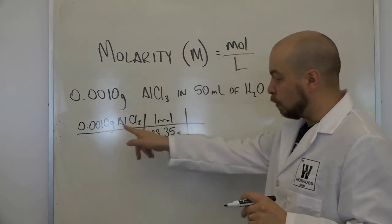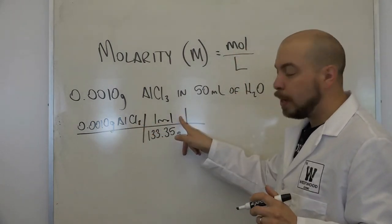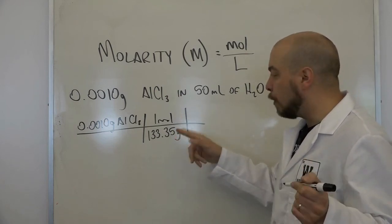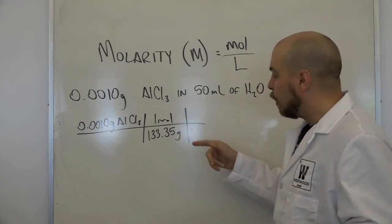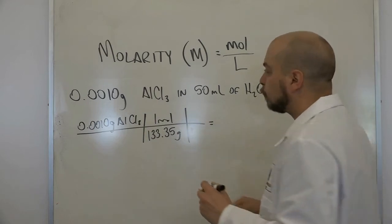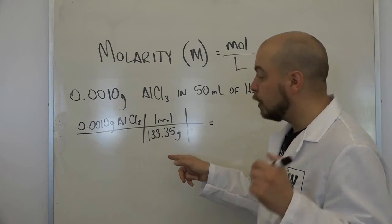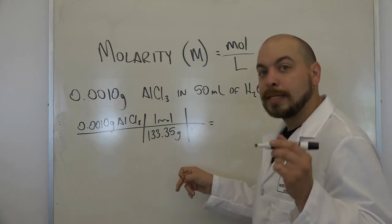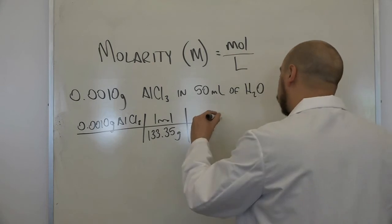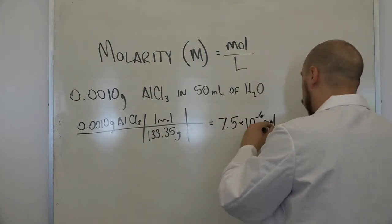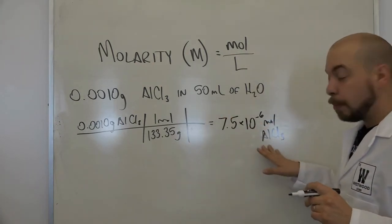Now, we've canceled grams, we're in moles of aluminum chloride. Now what we need to do is say, okay, well how many moles of aluminum chloride is that? That's going to give us 7.5, two sig figs, remember, 7.5 times 10 to the negative sixth moles of aluminum chloride. So there's our number of moles.